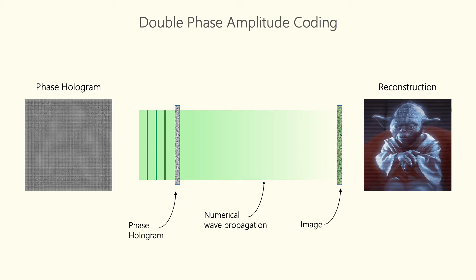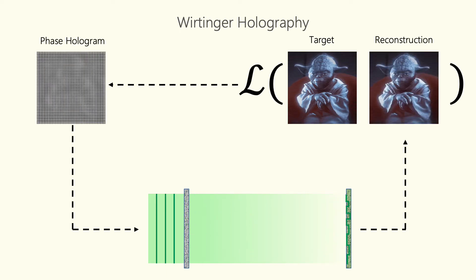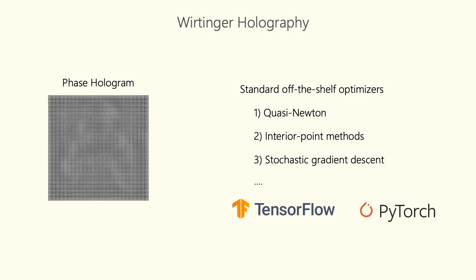Another widely used method is the double-phase amplitude coding method, where waves are propagated back to the hologram plane from the image plane, and the complex amplitude is encoded into two phase-only pixels. While this works reasonably well, it is not very robust, and we typically see some loss in resolution and sometimes contrast. Last year, we proposed a first-order optimization-based approach for computing phase holograms which we call Wirtinger holography, utilizing non-trivial complex Wirtinger gradients. This approach produced perhaps the best holographic images in simulation so far. Popular machine learning libraries such as TensorFlow and PyTorch now have complex number support with Wirtinger gradients built in, so you can compute Wirtinger holograms without explicitly computing the gradients yourself.